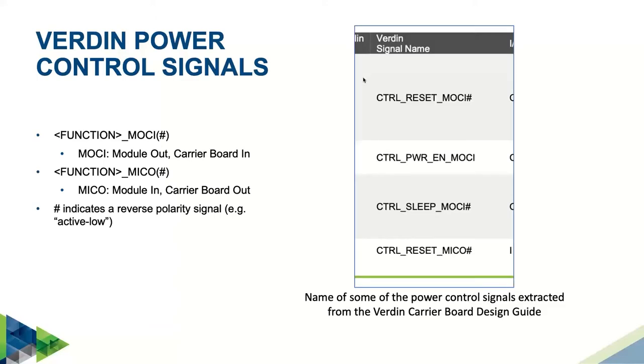These are some of the signal names extracted directly from the design guide. For example, the first one, control reset MOCI hash, is an output from the module to reset carrier board peripherals and comes directly from the SoC reset signal. Hash at the end means this is an active low signal, so a low level signal means to reset and a high level signal means normal operation.